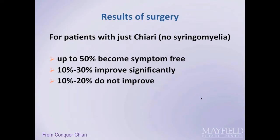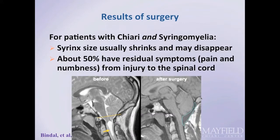Reasons for not improving after surgery, assuming it was properly performed, may include unrealistic expectations, confounding comorbidities, or an incorrect diagnosis. Overall, about 50% of patients may become symptom-free, and 10-30% more may have significant improvement. 10-20% may not have substantial improvement. For Chiari patients with syringomyelia, the syrinx usually does shrink after surgery, indicating successful surgery; however, 50% of patients may continue to have residual symptoms related to permanent spinal cord damage.